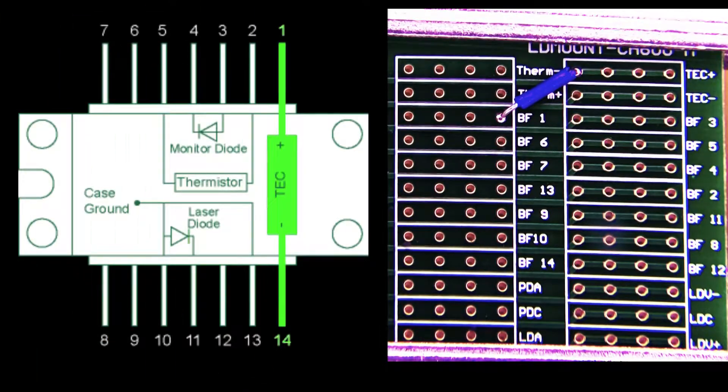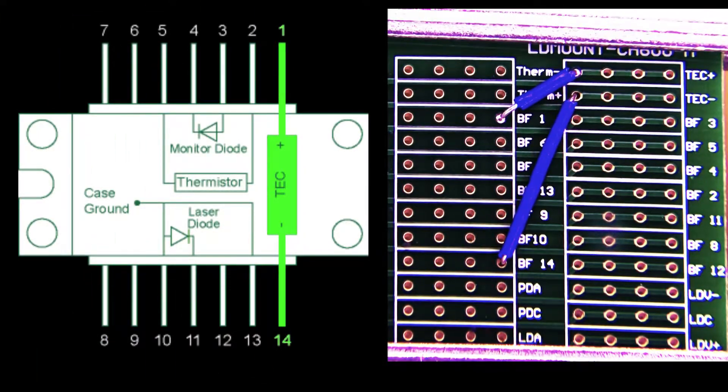In this example, the TEC-plus pin is connected to butterfly pin 1 and the TEC-minus pin to butterfly pin 14. These two connections tie the positive terminal of the temperature controller output to the first butterfly pin and the negative terminal to the 14th pin.